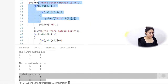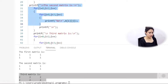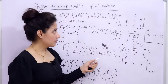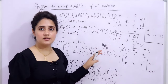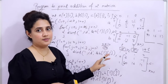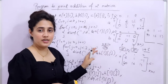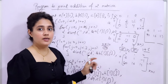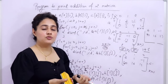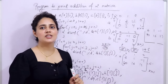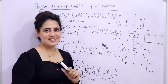Now your assignment is to do subtraction of two matrices. I have done addition — you have to do subtraction, i.e., minus of two matrices. In the next video, we will see multiplication of two matrices. See you in the next video. Bye, take care.